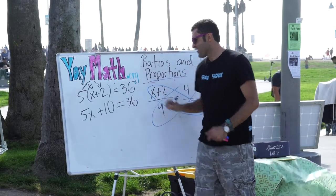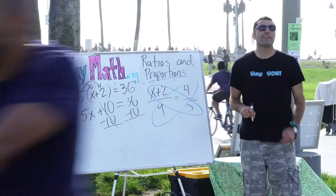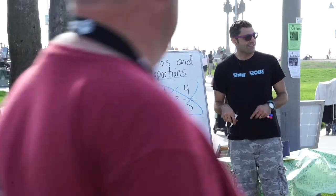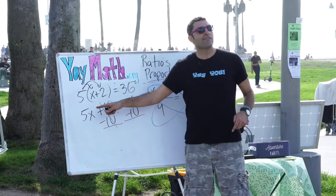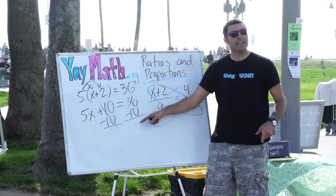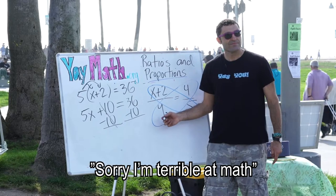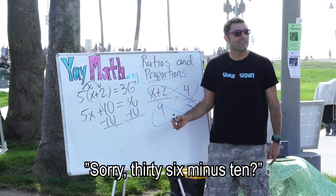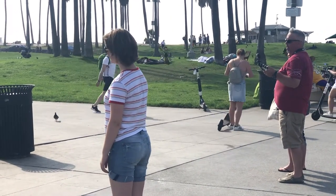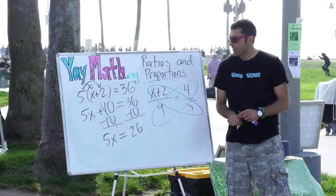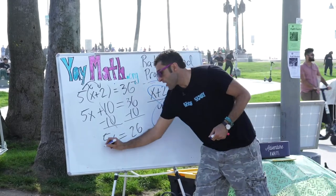5x plus 10 equals 36. Minus 10, minus 10 — to solve for x, we get x by itself. This is called isolating the variable. So I subtracted 10 on both sides. What is 36 minus 10? 26. So 5x equals 26, which means x equals 26 over 5. That's pretty much the answer.